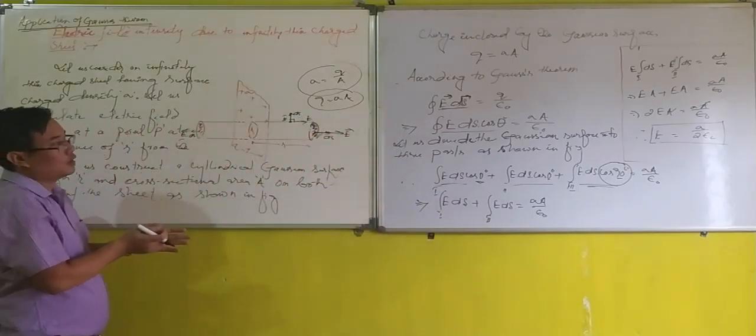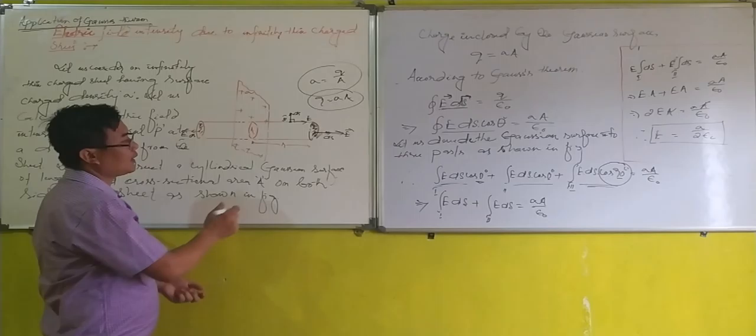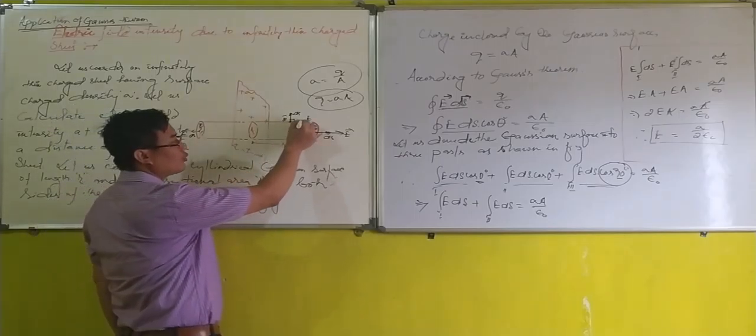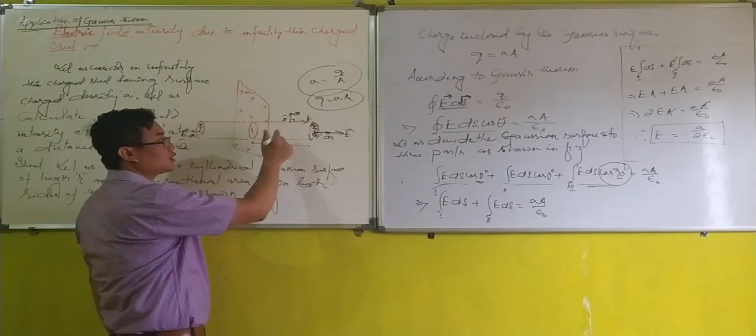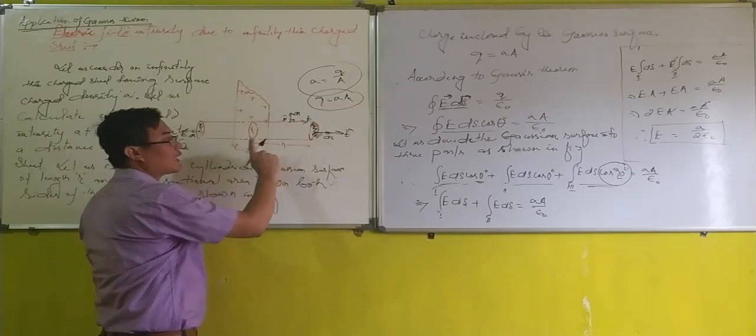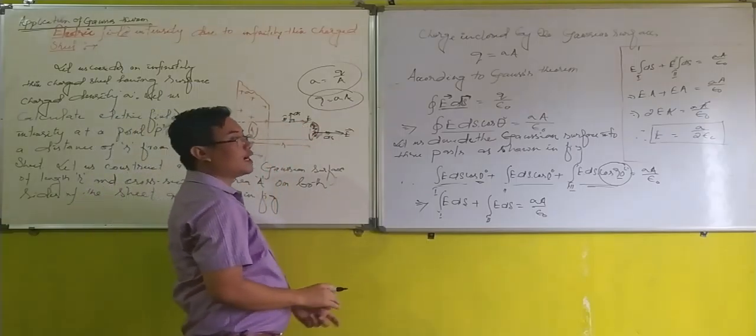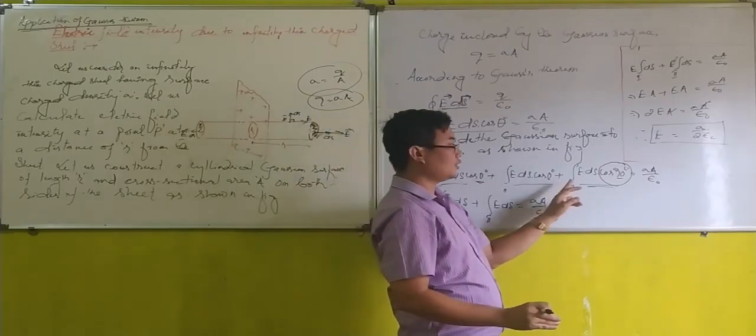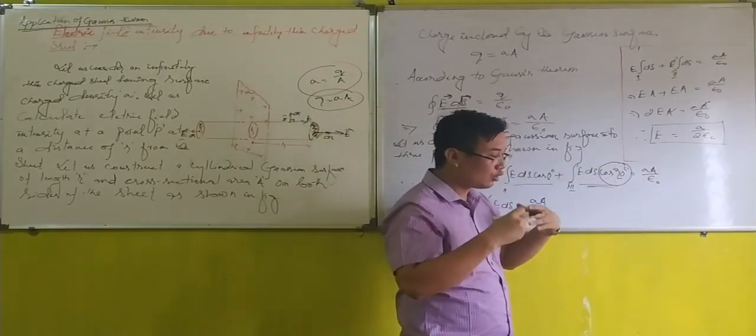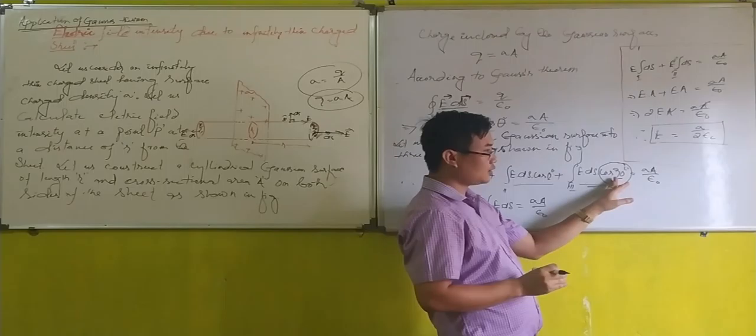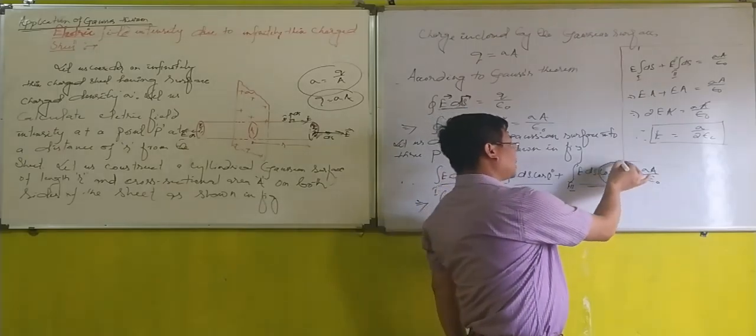And the third part, the lateral surface area, electric field intensity is away from the charge. And dA is a vector perpendicular to the surface. Therefore, the angle between them is 90 degrees. And in the third part, I have written here E dS cos 90. We know that cos 90 is zero. And in the third part, we will get zero.